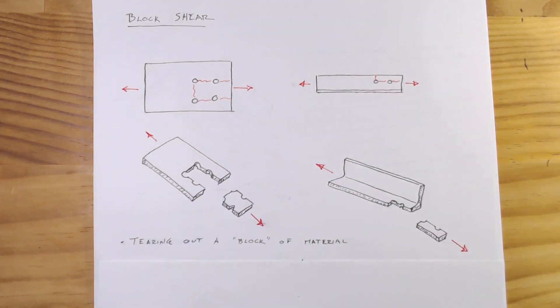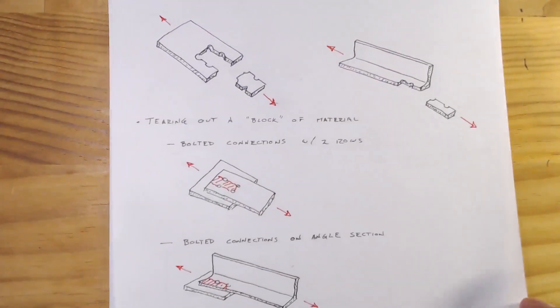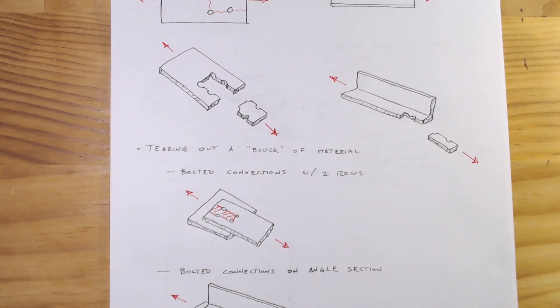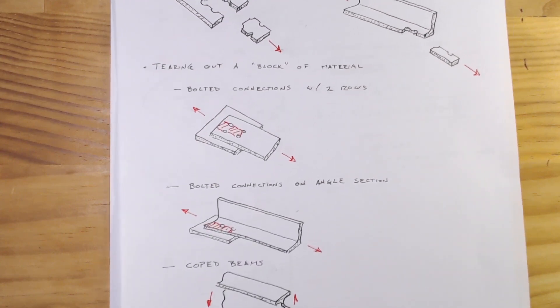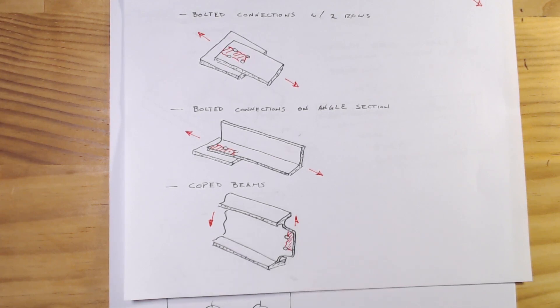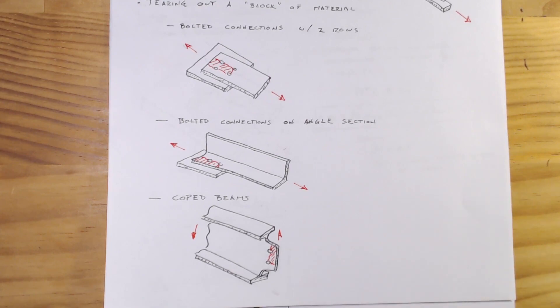I'll just show you a few other cases where this would happen. So typically, you've got a bolted connection which you have at least two rows, as I said, an angle design. And then also these sort of coped beams, which are where the flanges are cut back in order to be able to fit within a perpendicular beam there.